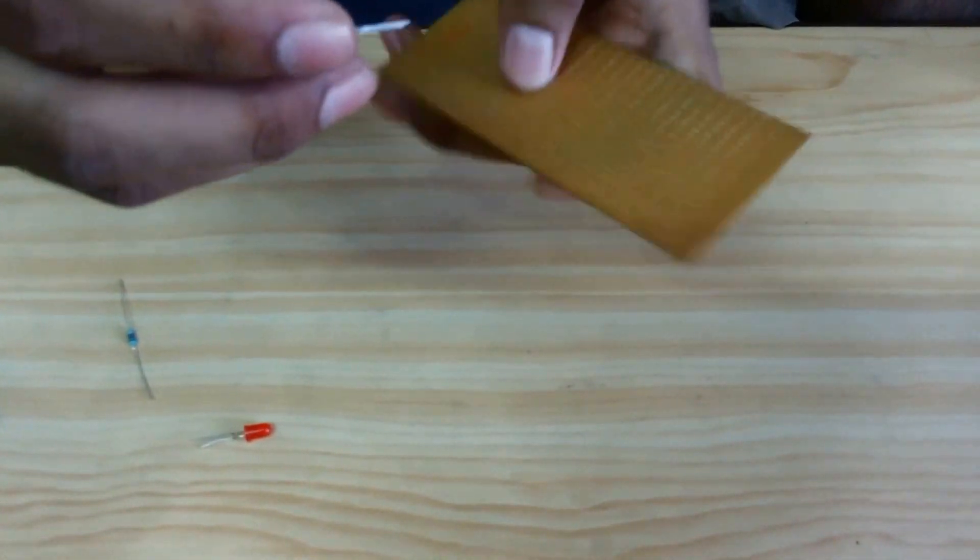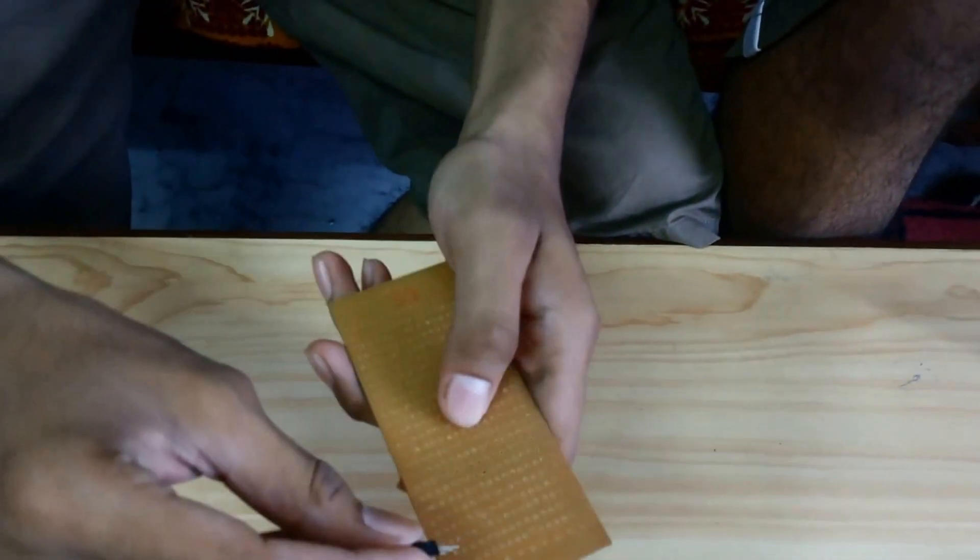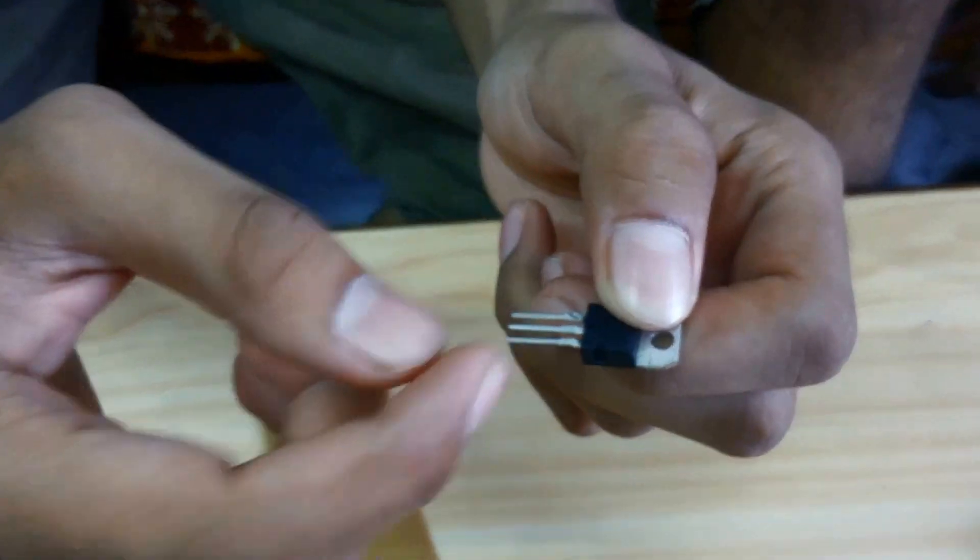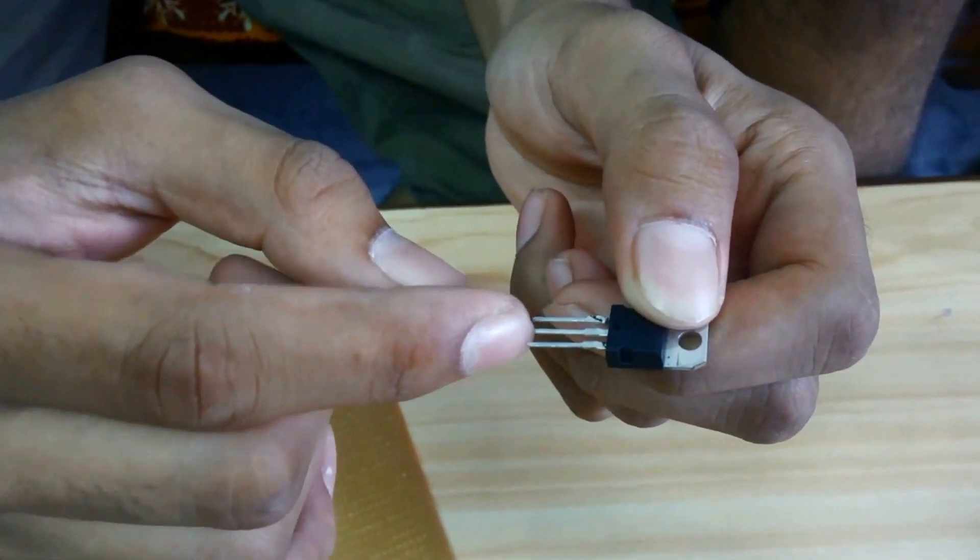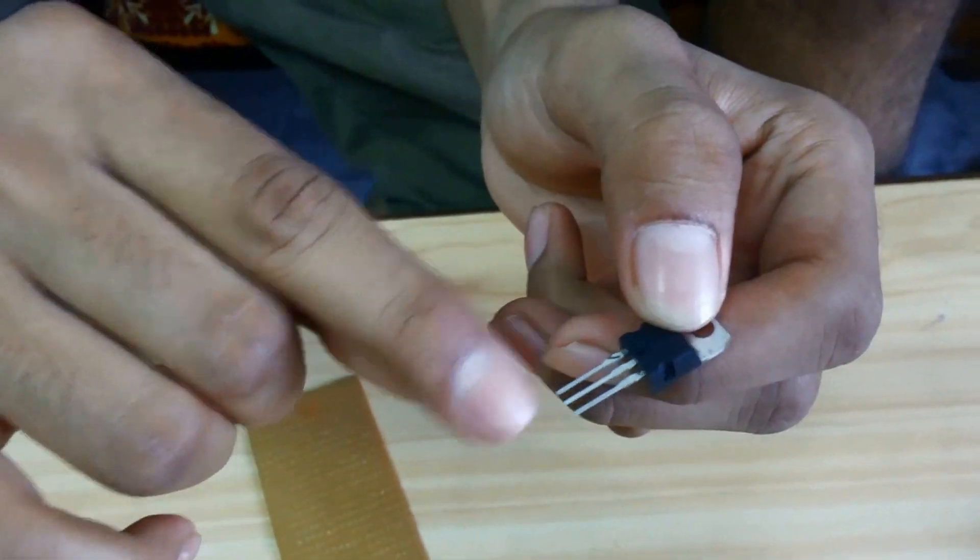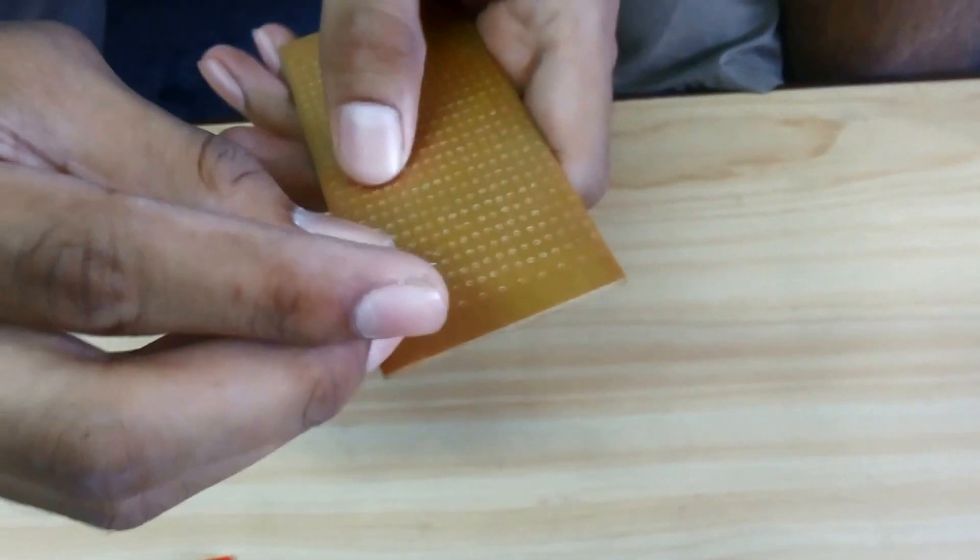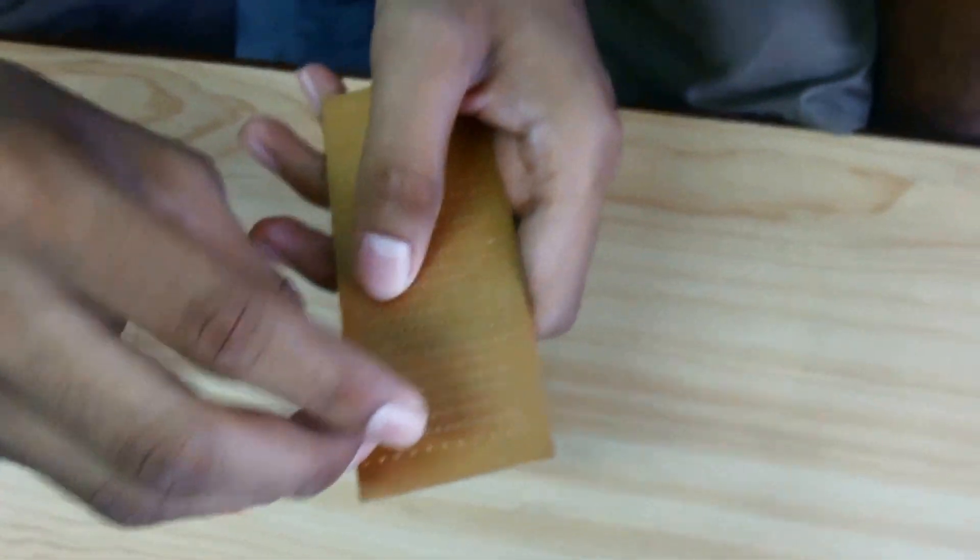So first we are putting the IC in the circuit. Now see, this is the output pin, this is the ground pin in the middle, and this is the input pin. We are pinning it into the board.